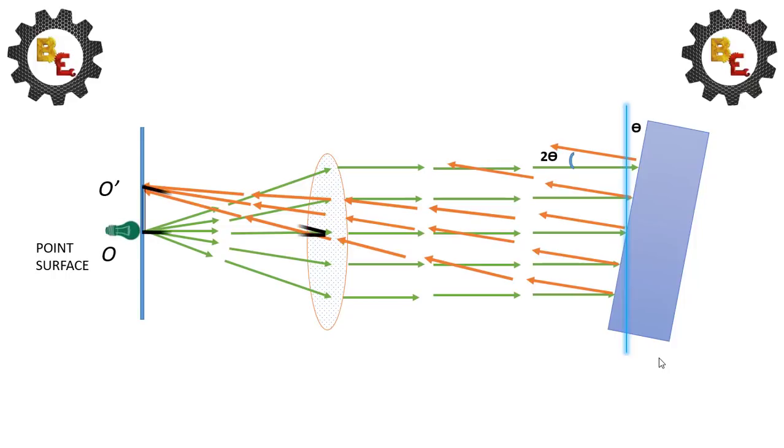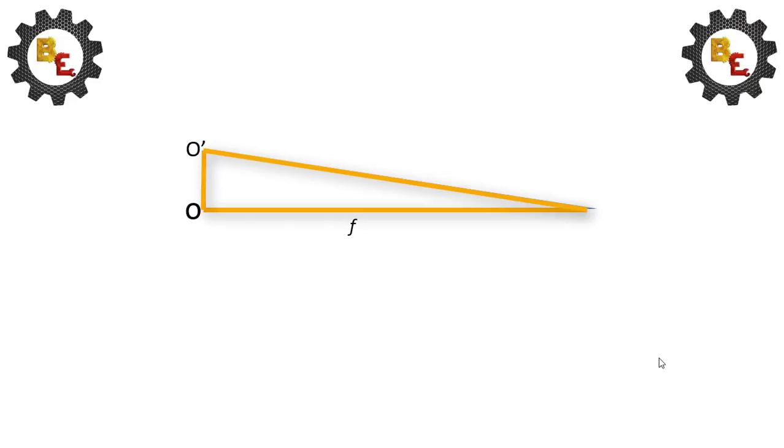Now we can make a triangle O'. This is the triangle O' and F is the focal length. 2θ is the angle of reflection. O' equal to x. Then, tan 2θ equals O' divided by focal length.